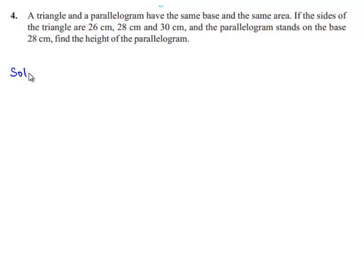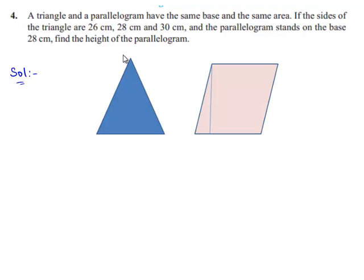Let us move on to the solution. We shall consider a triangle and a parallelogram. Let us name the triangle as A, B and C, and name the parallelogram as P, Q, R and S. Given that the sides of the triangle are 26 cm, 28 cm and 30 cm.